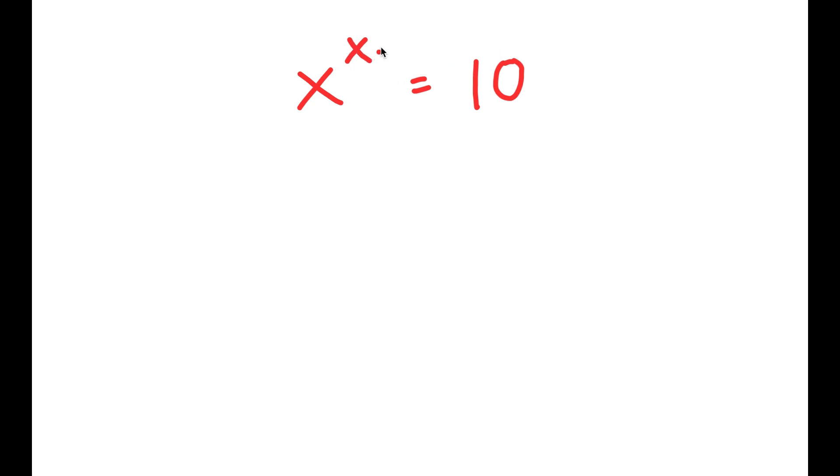And it's really hard to solve this because let's say we had something like phi to the power of x is equal to 10. This is more simple. We would just use logarithms to solve this, but it's much simpler than x to the power of x equals 10.